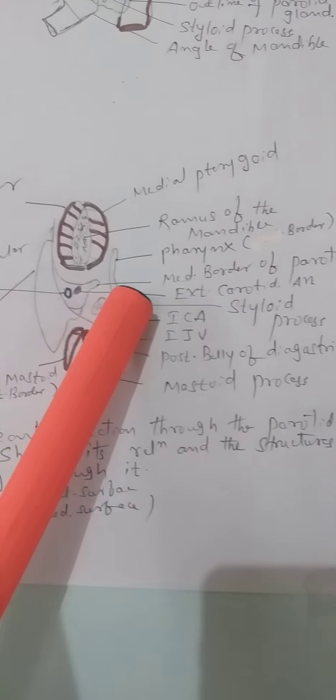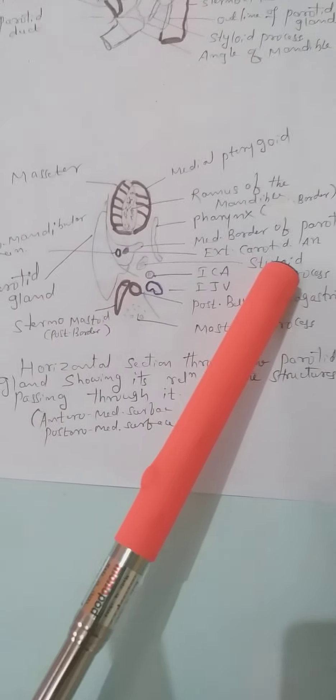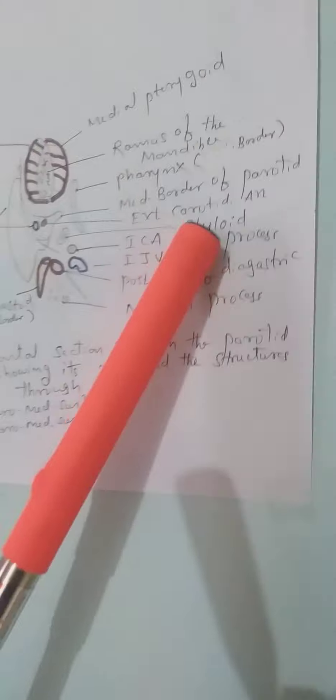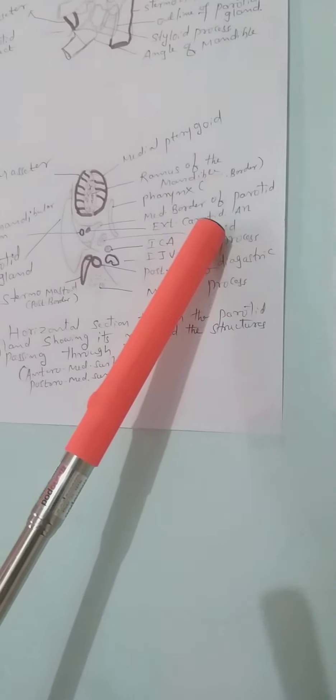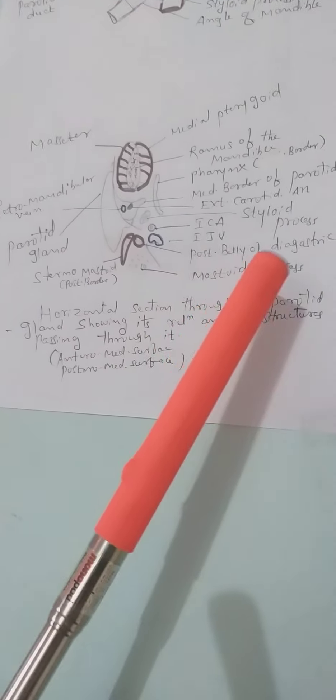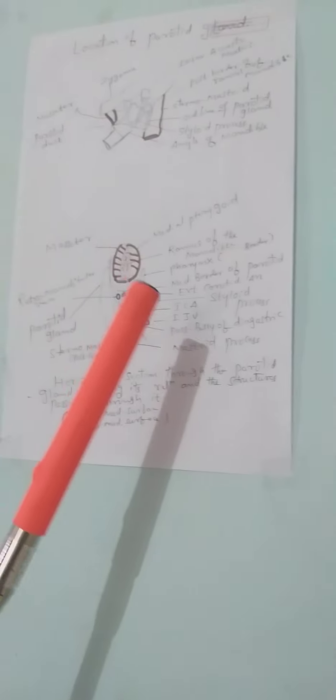Posteriorly and medially, you can see the styloid process and mastoid process. Posteromedially, two things are important: the styloid process and mastoid process and their attachments. The styloid process has five attachments - three muscles and two ligaments. The three muscles are styloglossus, stylopharyngeus, and stylohyoid. The two ligaments are stylomandibular and stylohyoid. The mastoid process attachment is the sternomastoid and the posterior belly of the digastric. These relate to the posteromedial surface.